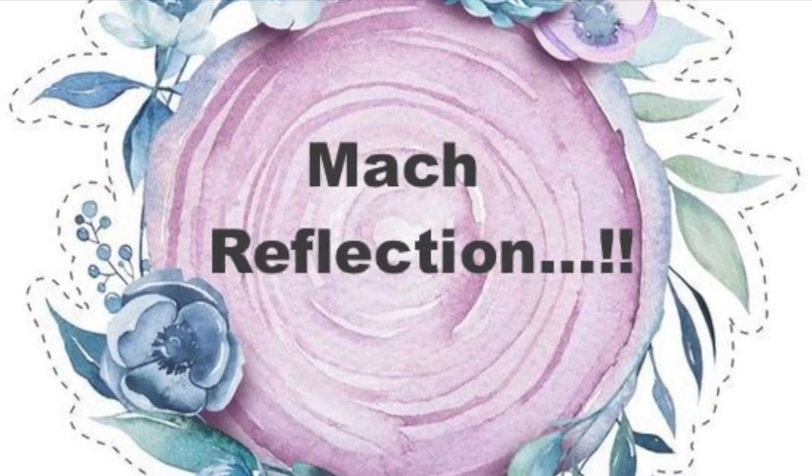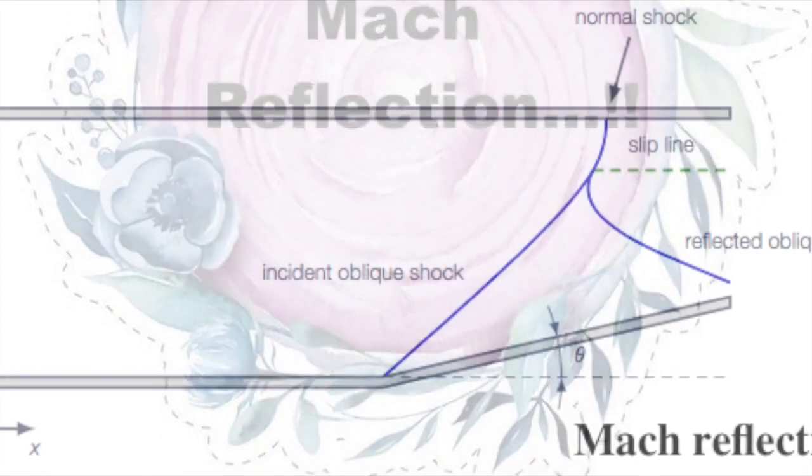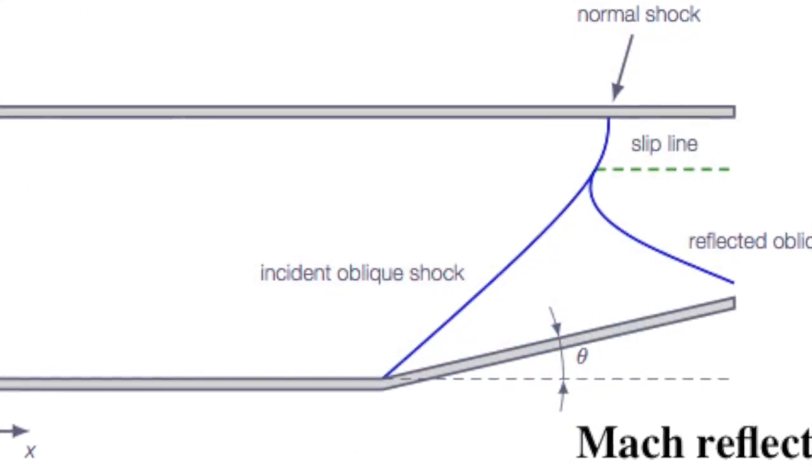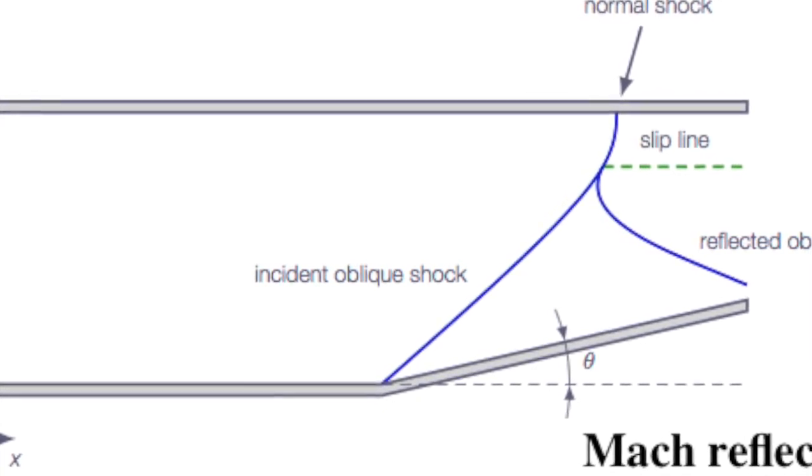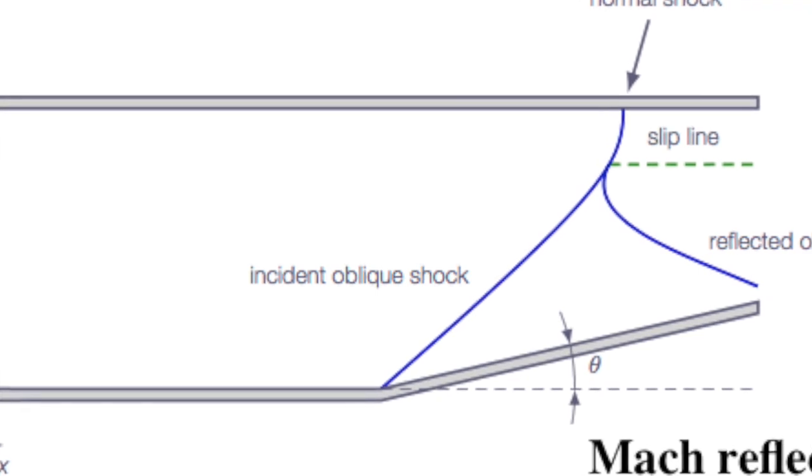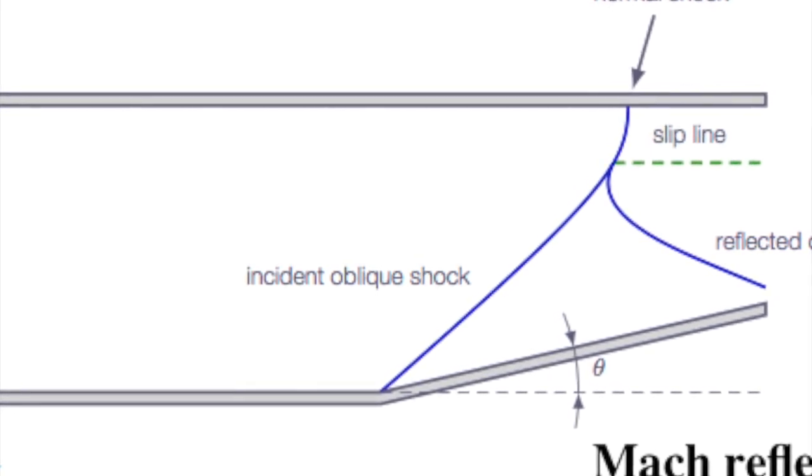Mach Reflection: For incident shock with an upstream Mach number of M1, theta is smaller than theta max, and hence the incident shock is an allowable straight oblique shock solution.